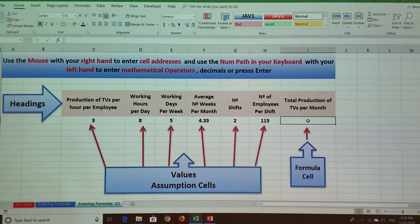First you click the cell where you need to enter a formula. In this case we're going to multiply all these numbers to calculate the total production of TV per month.